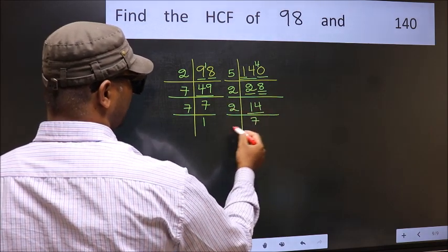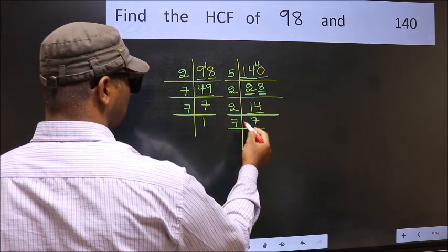Now 14 is 2 7s, 14. 7 is a prime number, so 7 1s, 7.